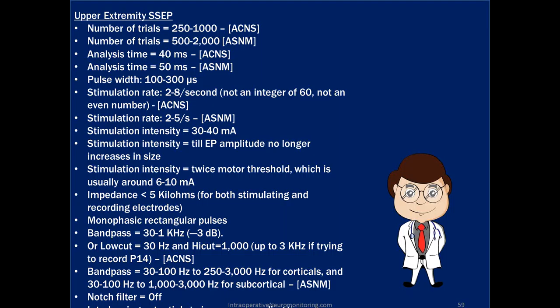Stimulation intensity: 30 to 40 milliamps is a general guideline. Intensity has been shown to work well with peripheral responses, most notably ERBs point — stimulate until ERBs point amplitude no longer increases in size. Increasing intensity doesn't fire an axon more; it stimulates a greater number of axons. Since ERBs point is a peripheral response with no synapses, it reflects all axons being fired additively, so when the amplitude plateaus, you've reached maximal axon summation.